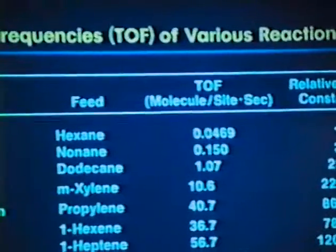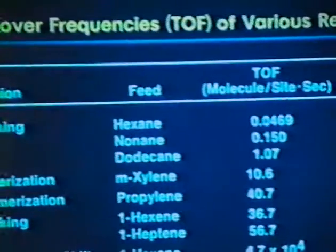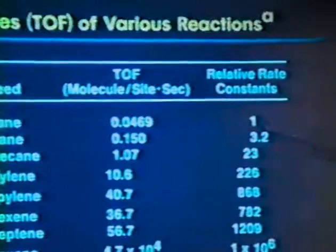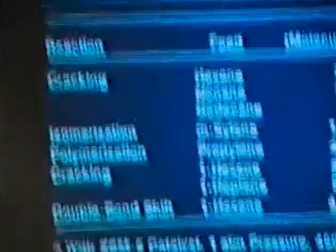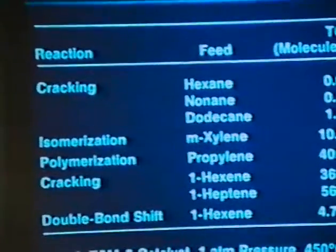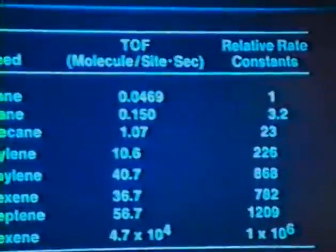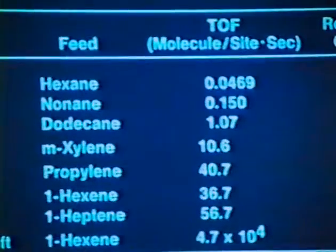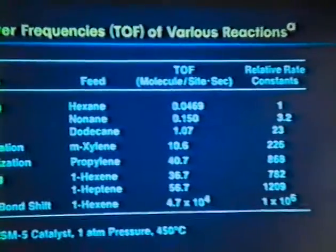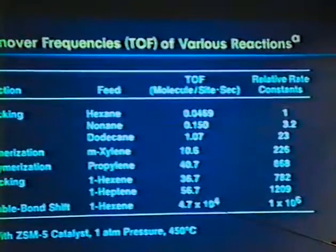And if you look at the relative numbers, hexane being one, and higher paraffins are higher. Xylene isomerization. Oligomerization, thousand times faster. Olefin cracking, about a thousand times faster than hexane cracking. And double bond shifts in olefins, which is hard to measure, the rate is so fast. This is about a million times faster. In terms of absolute values, we just focus on this, perhaps.